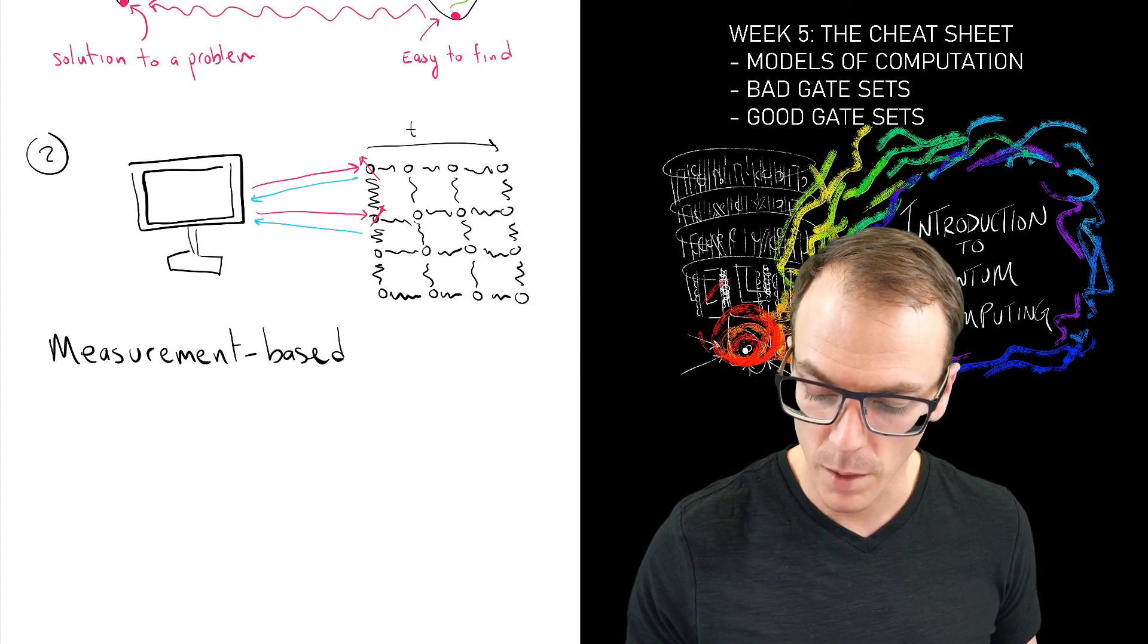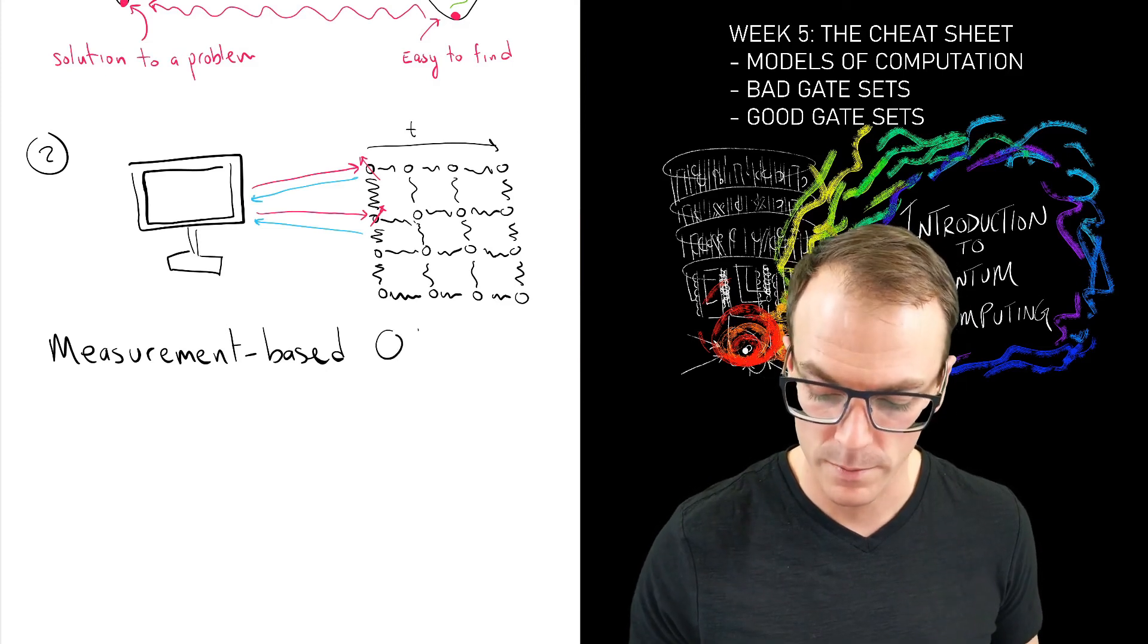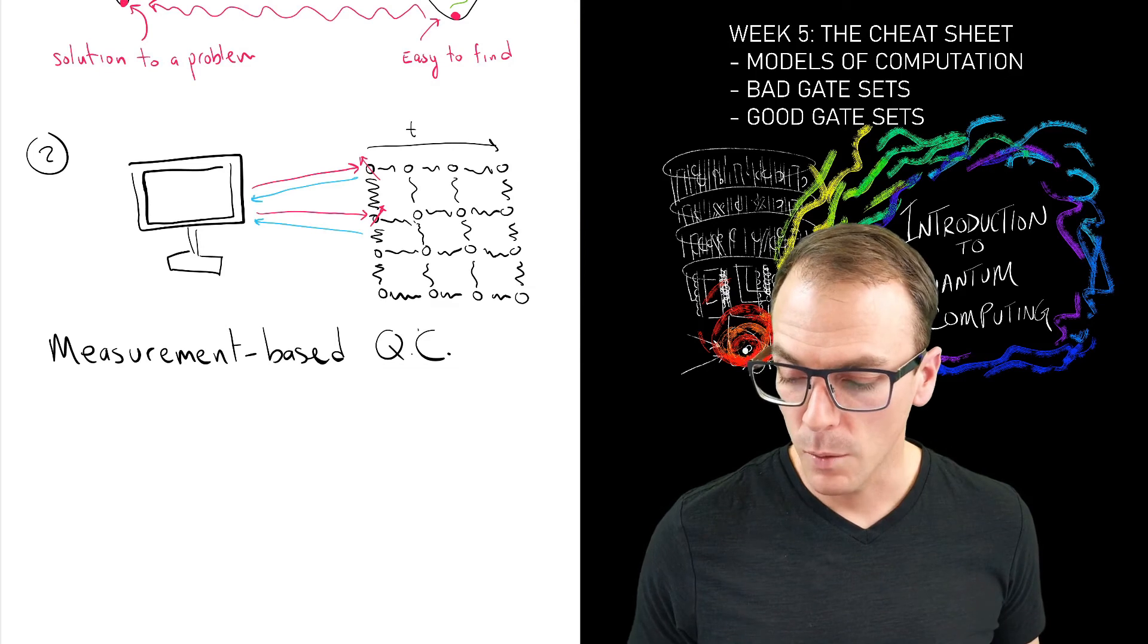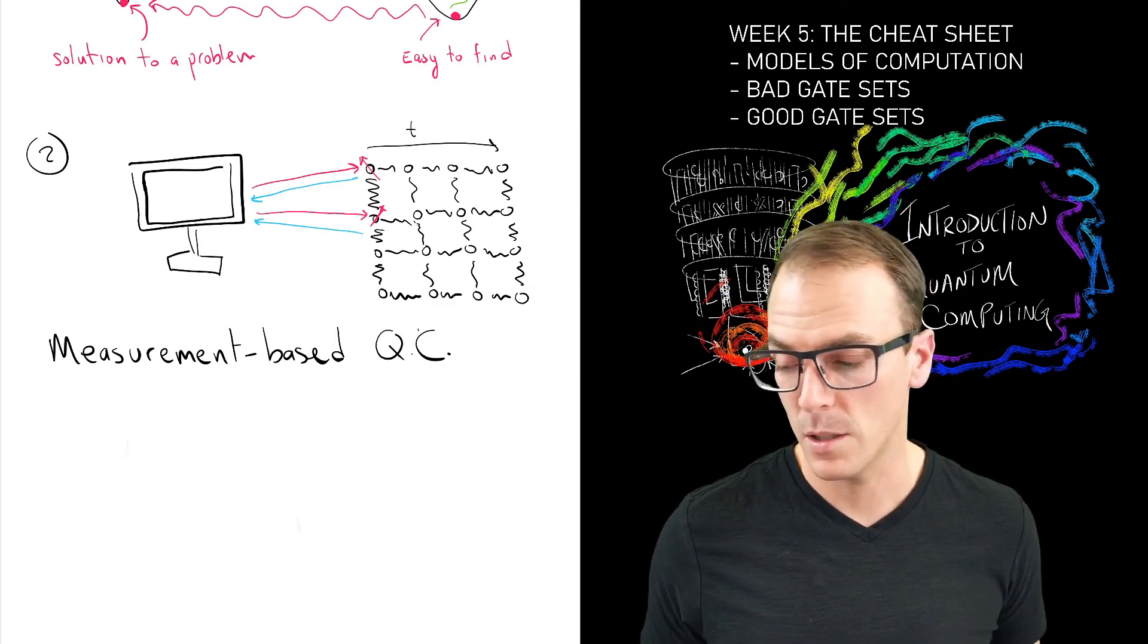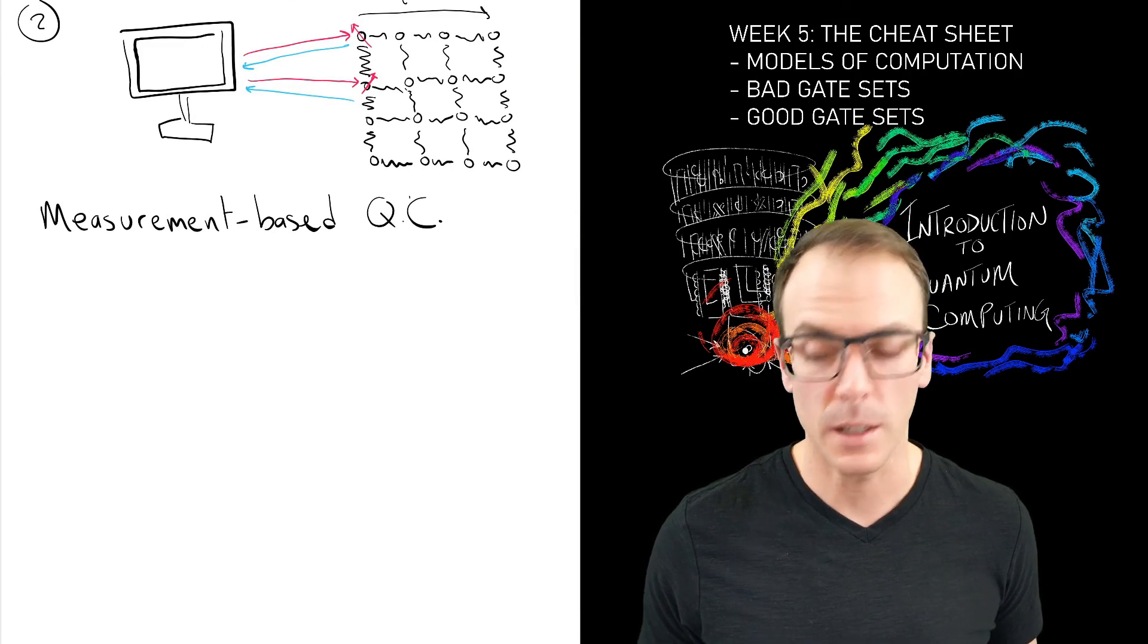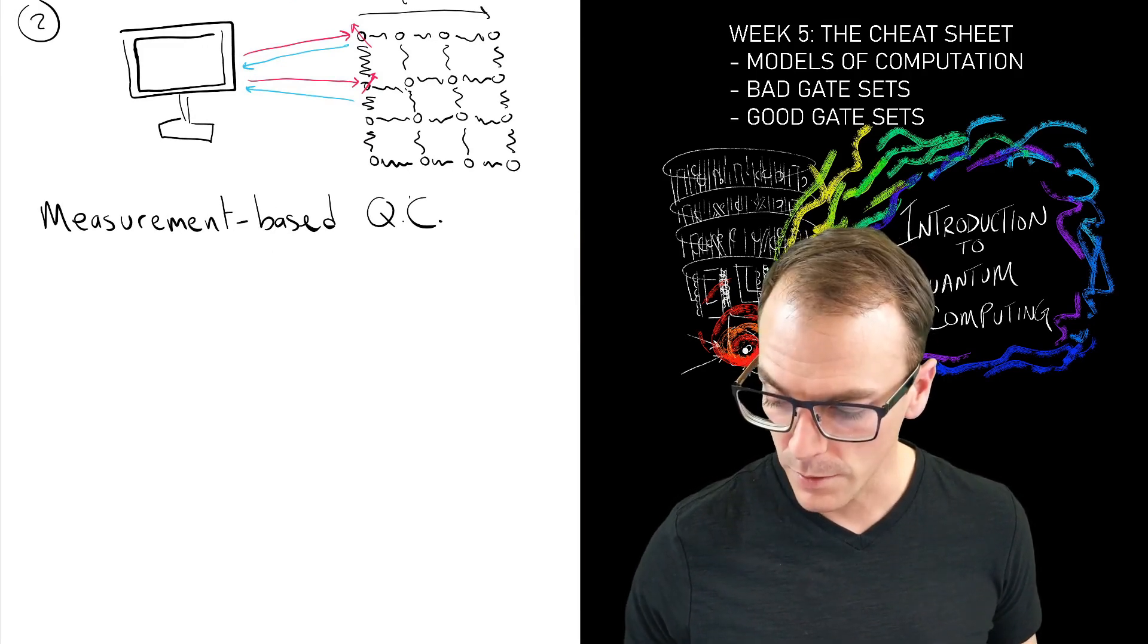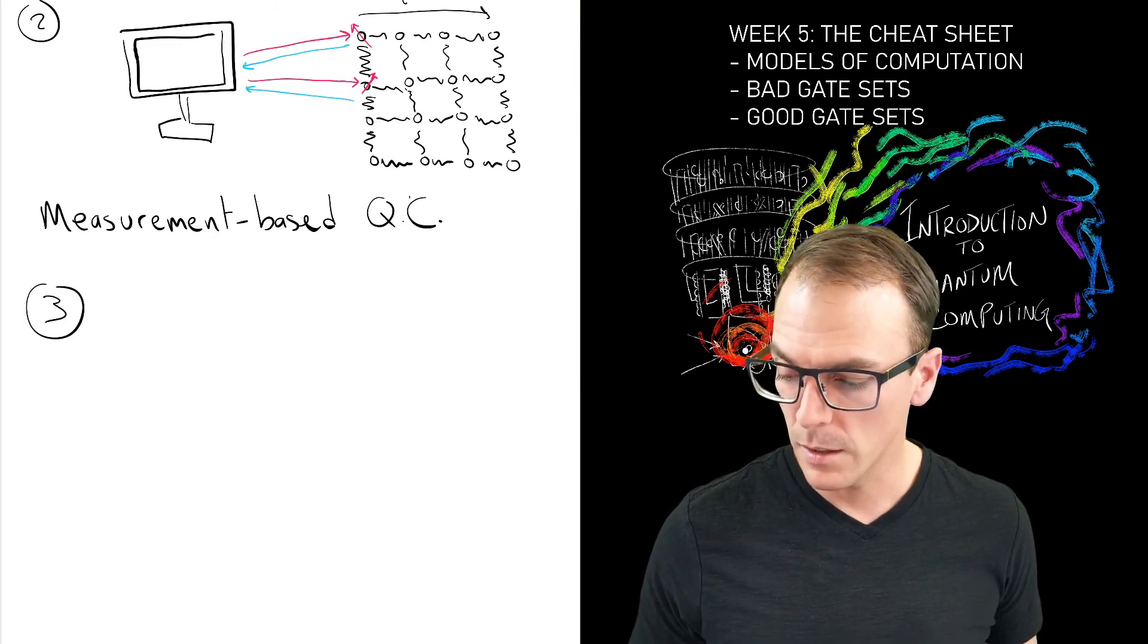And I should have written down at the top, but I'll write down at the bottom this is called the one-way model, or more descriptively, the measurement-based model, measurement-based quantum computation.